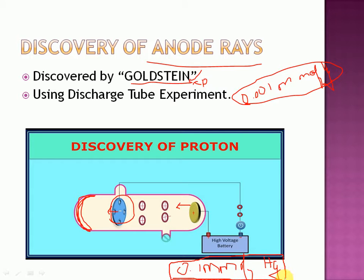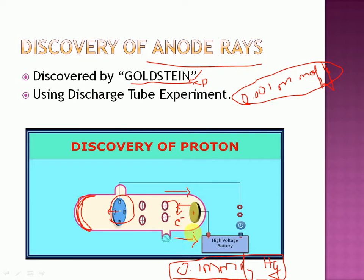What happened is that these gas atoms started losing electrons. Why? Because these electrons were getting attracted towards the anode. These electrons, which were negatively charged, started moving towards the anode. And we know that this movement is of cathode rays. So during this particular experiment, even cathode rays were produced. But then, how were anode rays produced?